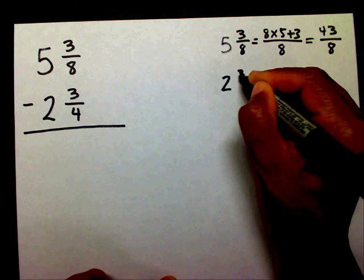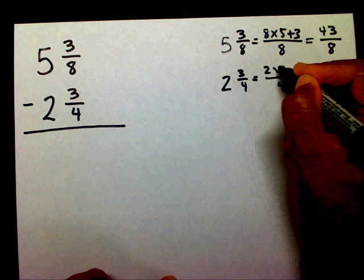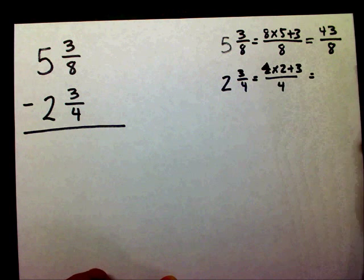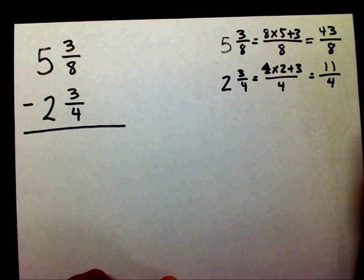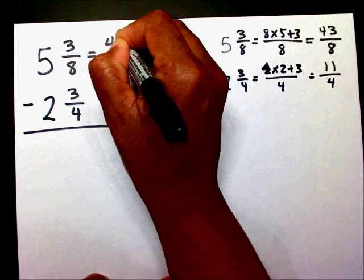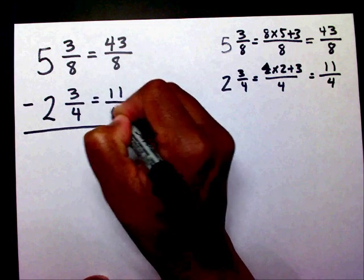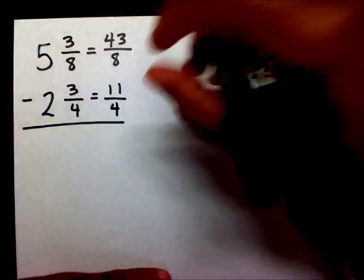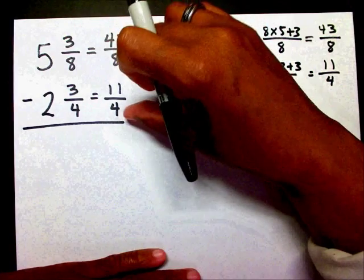And I'm going to rename 2 and 3 fourths — the denominator is 4, so that's 4 times 2 plus 3. 4 times 2 is 8, plus 3 is 11. So now I've written 43 eighths and 11 fourths. I just renamed them. But if you notice, we still have different denominators.